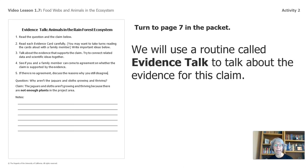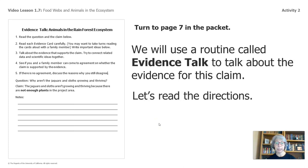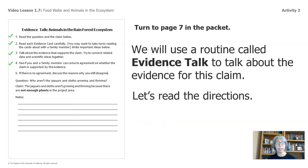Let's turn to page 7 in the packet. We'll use a routine called evidence talk to discuss the evidence for this claim. If we were in the classroom, we'd be using evidence circles. But we're at home, so we're going to talk through this. Read the question and the claim, then read each evidence card carefully. You may want to take turns reading the cards aloud to a family member. Write important ideas down, talk about the evidence that supports the claim, and try to connect the related data and scientific ideas together. See if you and a family member can come to an agreement on whether the claim is supported by evidence — this is the heavy lifting work that scientists do all the time.